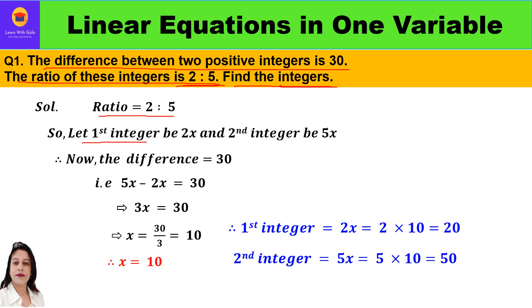Since the ratio is 2 is to 5, we will assume the first integer to be 2x and the second integer to be 5x. Then we move to the difference between these two positive integers, which is given as 30, so the difference is equal to 30.